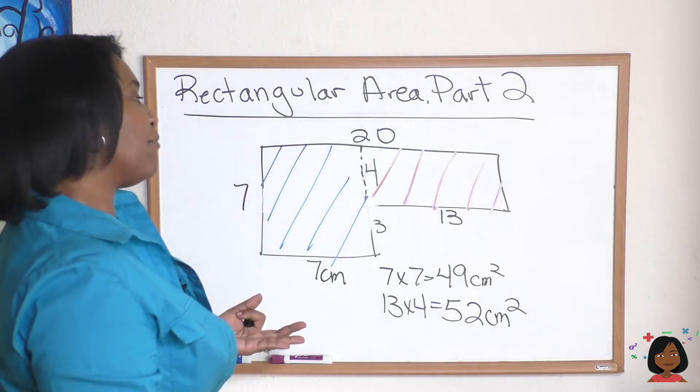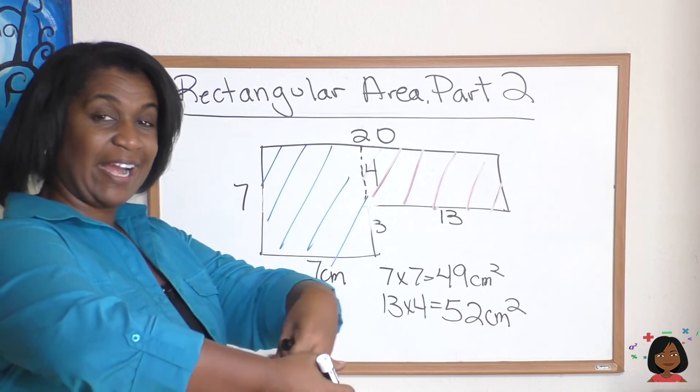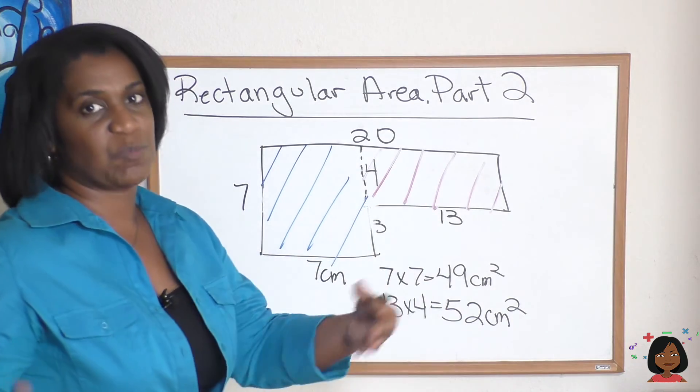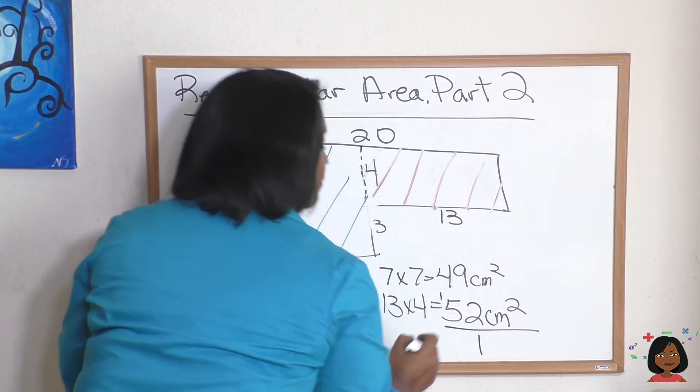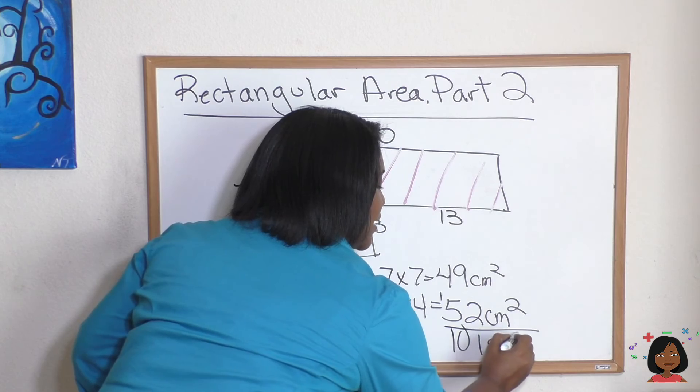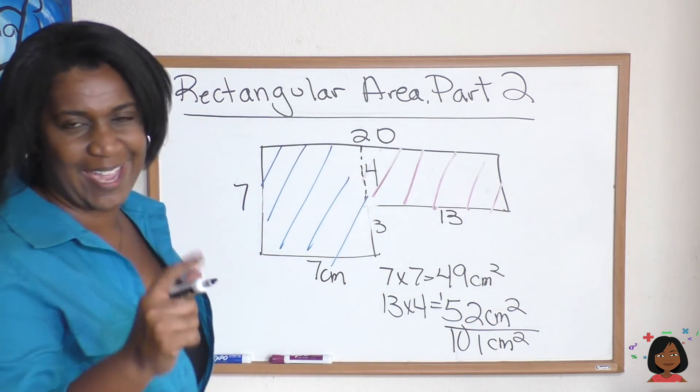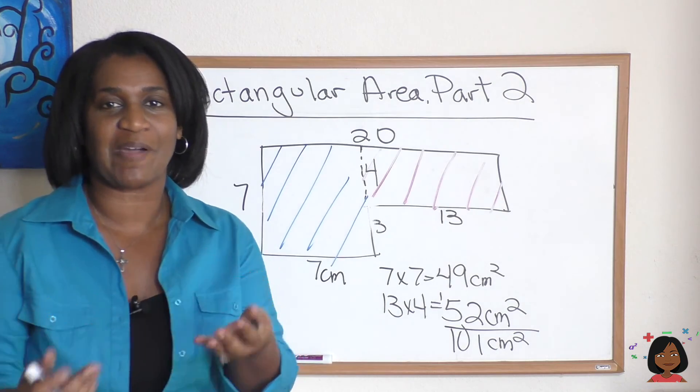Now, am I done? Not really. I've got the two individually, but I want to know what the rectangular area is for the whole shape. So I'm going to add the two of them together. Here we go. Nine and two is 11. Five and five is 10. 100 centimeters squared. And we can't forget that label of squared. It's super important whenever we're talking about area.